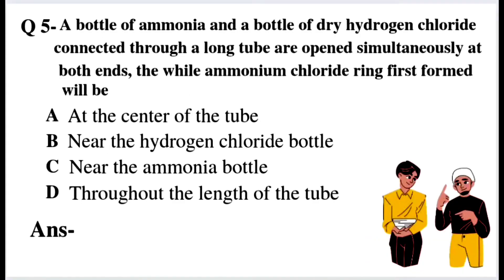Next question: a bottle of ammonia and a bottle of dry hydrogen chloride connected through a long tube are opened simultaneously at both ends. The white ammonium chloride ring first formed will be — Option A: at the center of the tube. Option B: near the hydrogen chloride bottle. Option C: near the ammonia bottle. Option D: throughout the length of the tube.